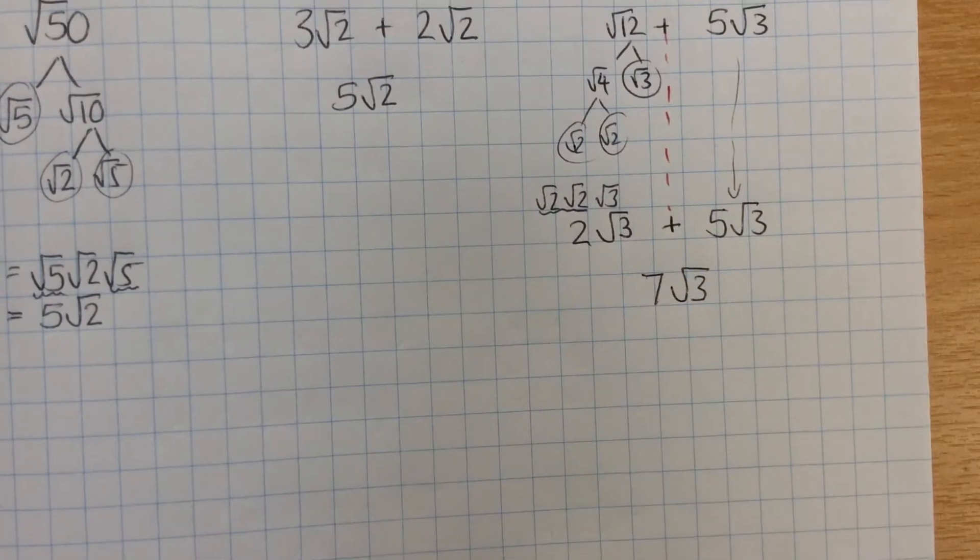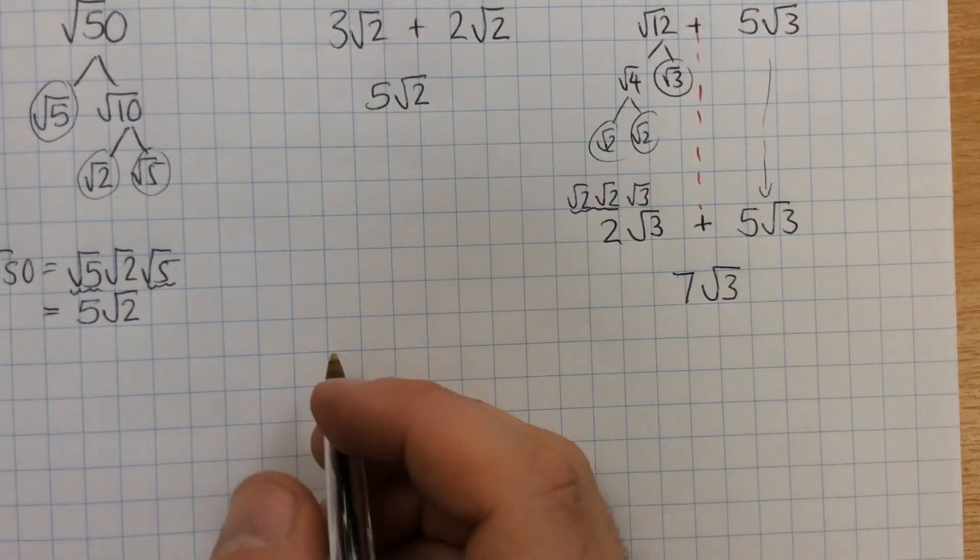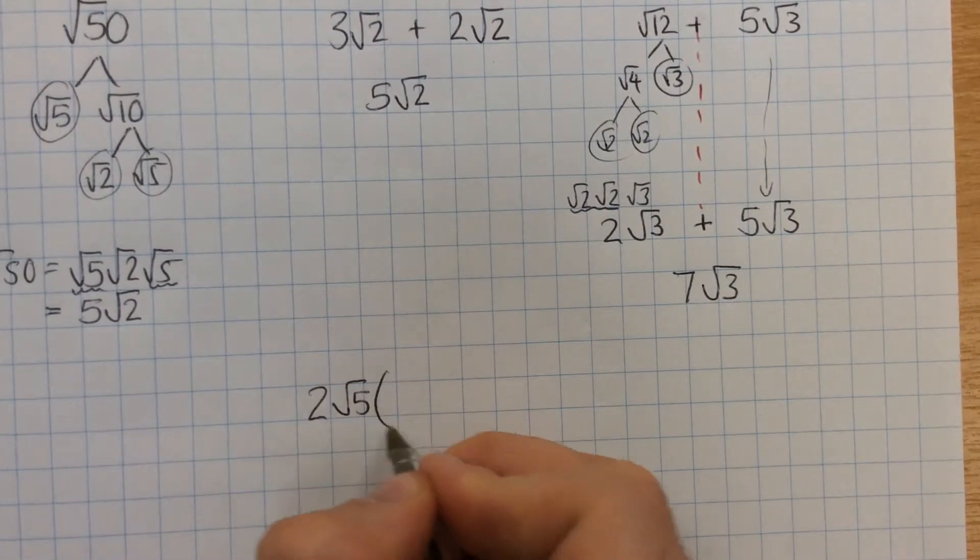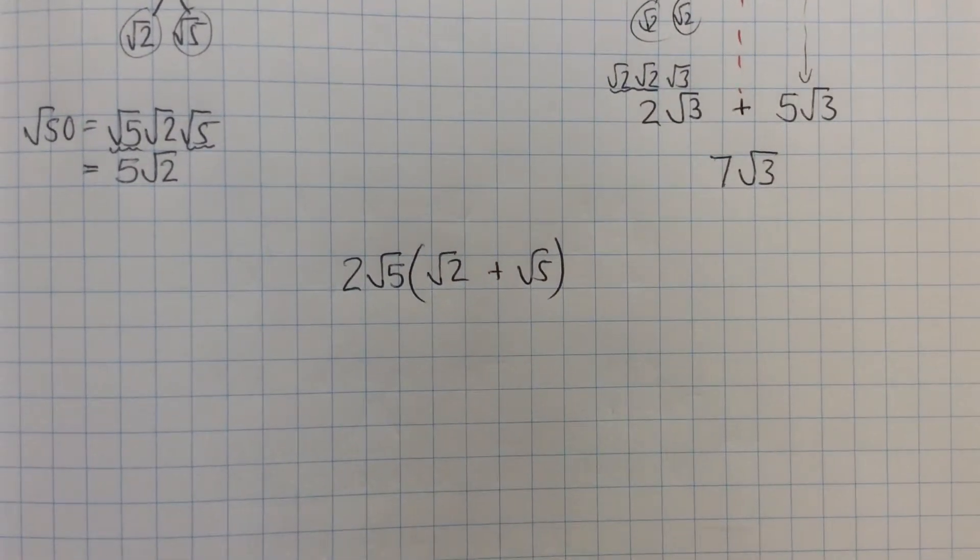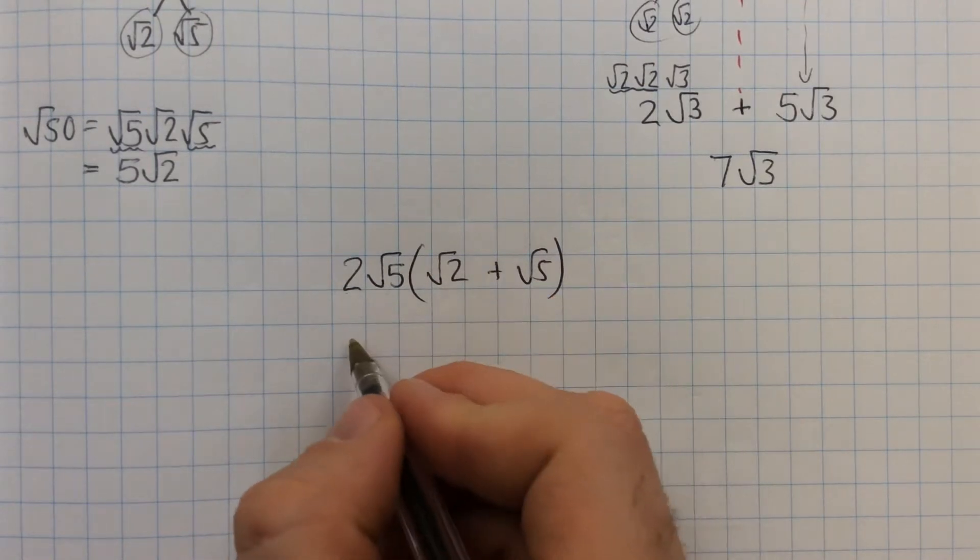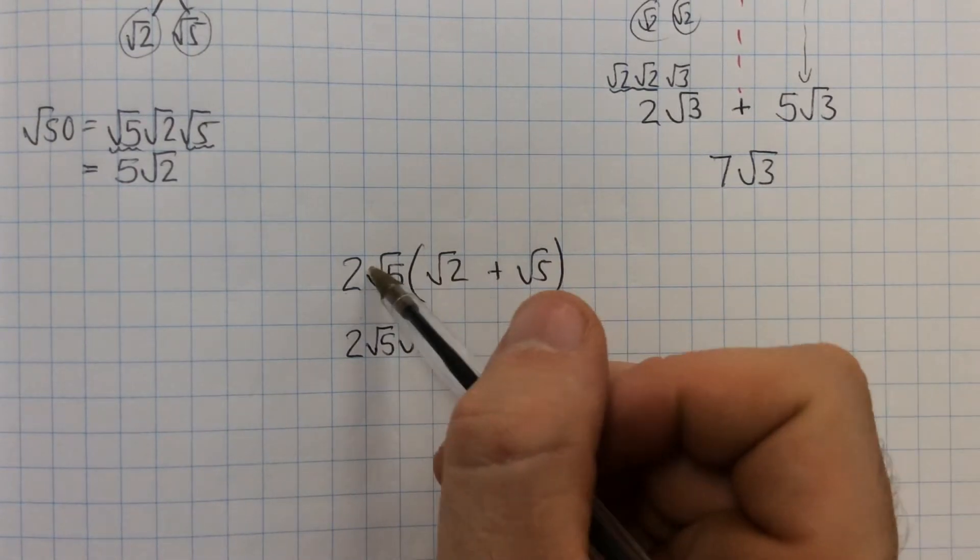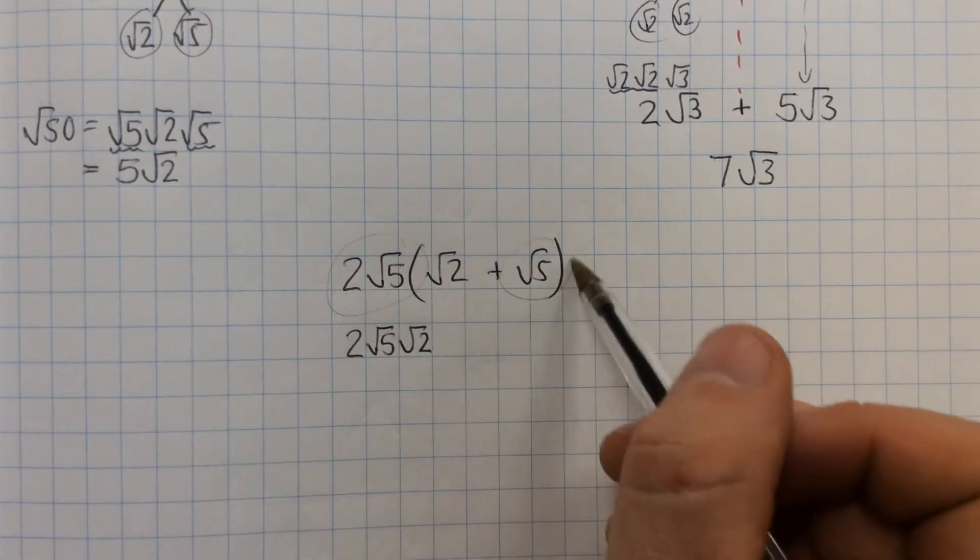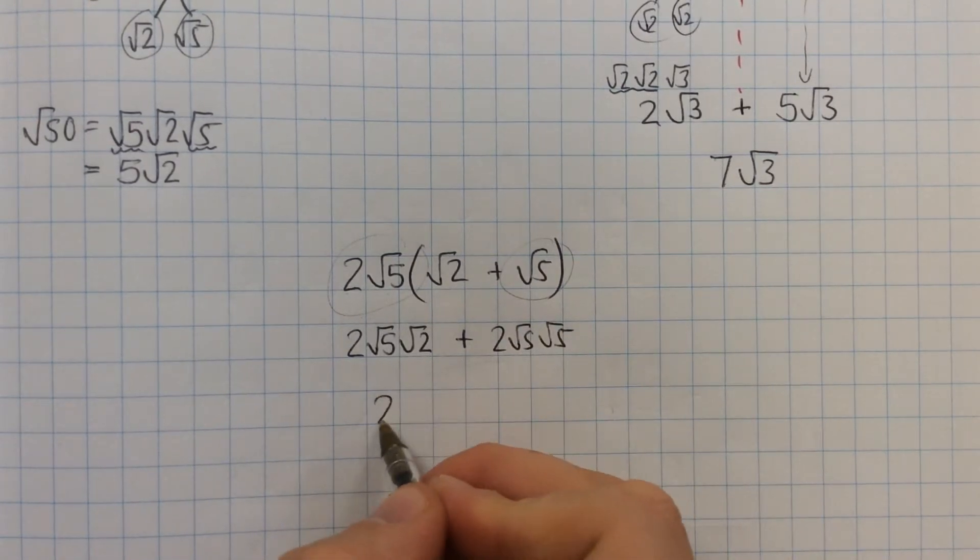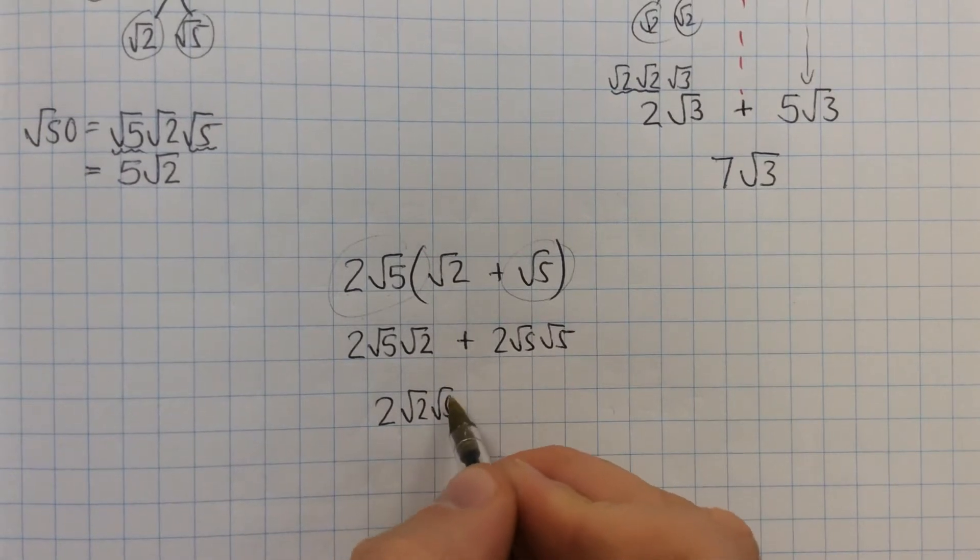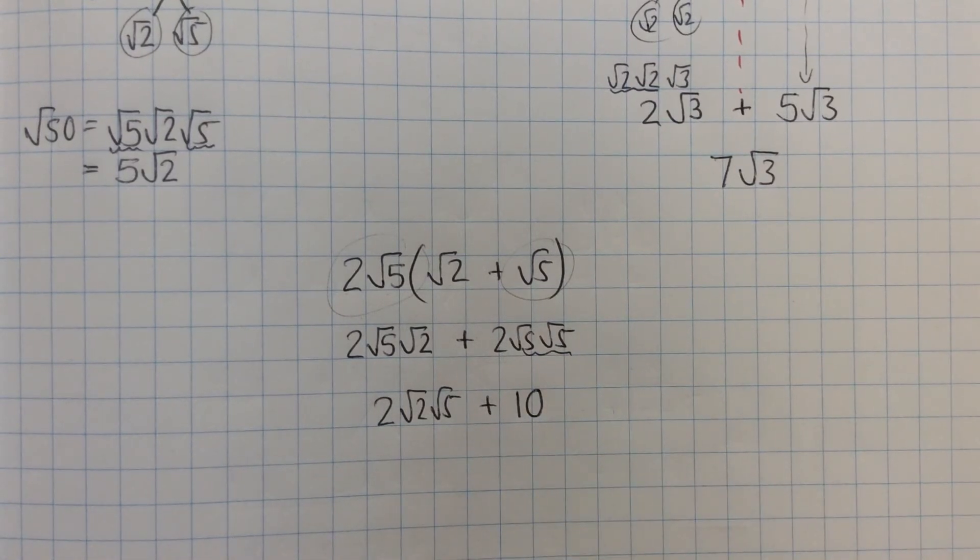The only other thing you could do with surds is multiply them. So if we do an example, let's do 2 root 5 times by root 2 plus root 5. So it's expanding a bracket. So 2 root 5 times root 2 is just 2 root 5 root 2, or you could write that as root 10, it wouldn't matter. And then 2 root 5 times by root 5 would give you 2 root 5 root 5. And then this one we can leave as it is. And then these two become a 5, so this becomes 2 times 5, which is 10, and then that's it simplified.